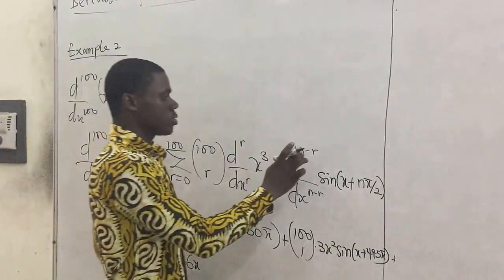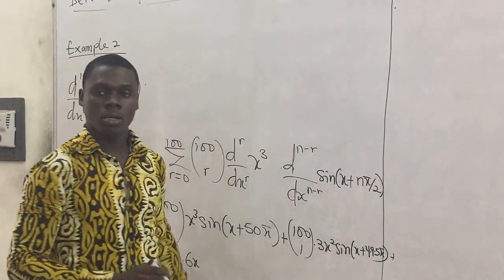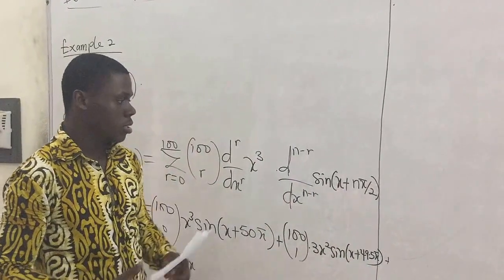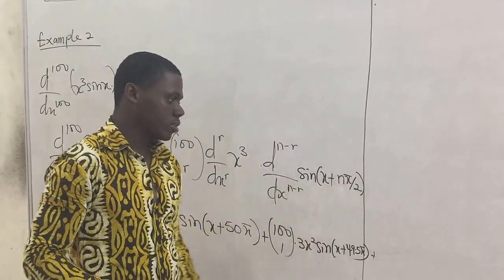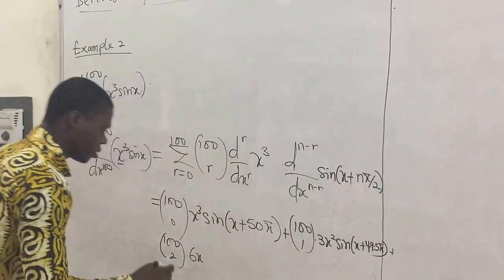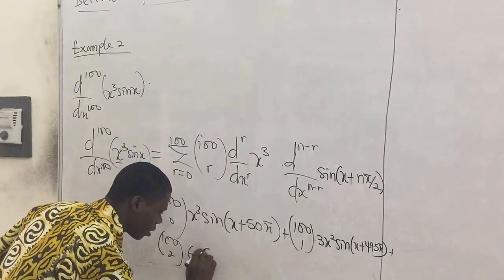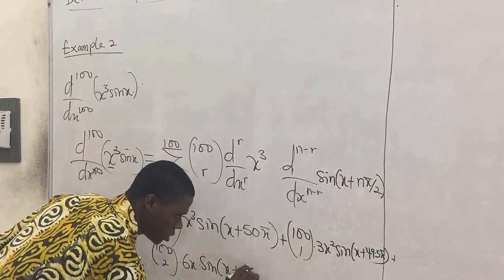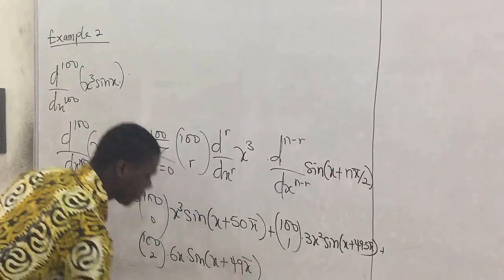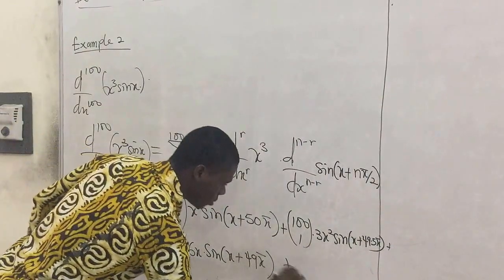And because r is 2, we subtract it from 100, and we're now going to have 98, which we'll place here. So 98 times pi over 2 will result in, we have sine x, then plus 49 pi, plus.